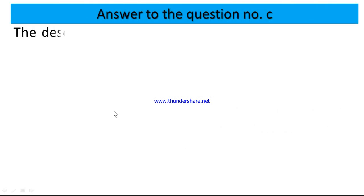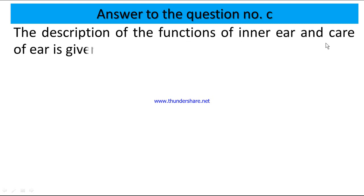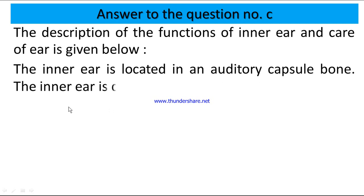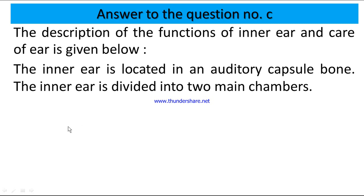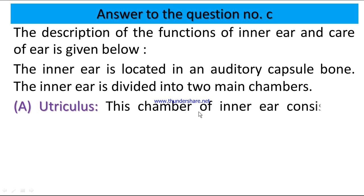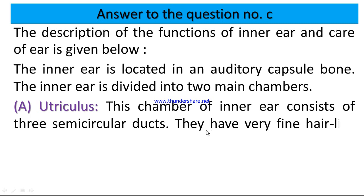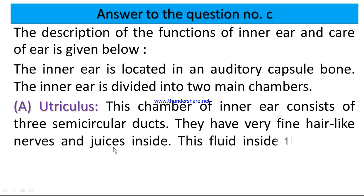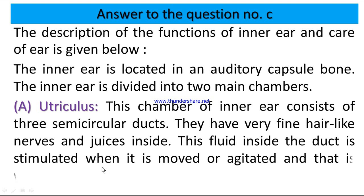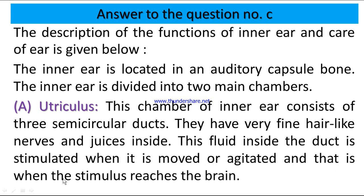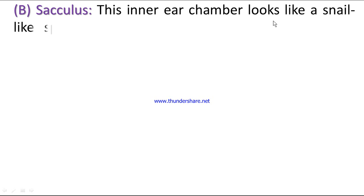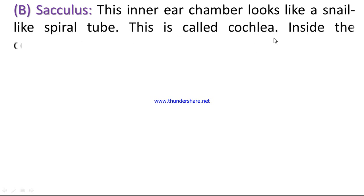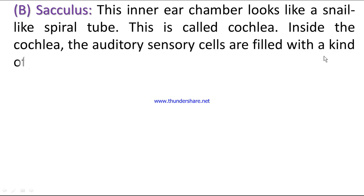Answer to question number C: the description of the functions of the inner ear and care of the ear is given below. The inner ear is located in an auditory capsule bone and is divided into two main chambers. Chamber A: the utriculus — this chamber of the inner ear consists of three semicircular ducts with very fine hair-like nerves. The fluid inside the duct is stimulated when moved or agitated, and that stimulus reaches the brain. Chamber B: the cochlea — this inner ear chamber looks like a snail-shaped spiral tube. Inside the cochlea, the auditory sensory cells are filled with a kind of fluid.